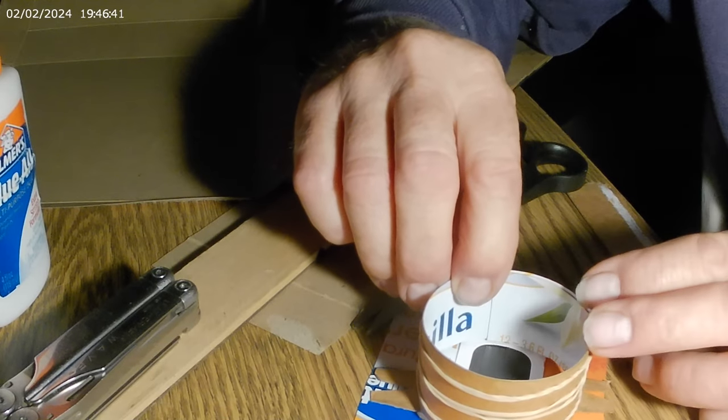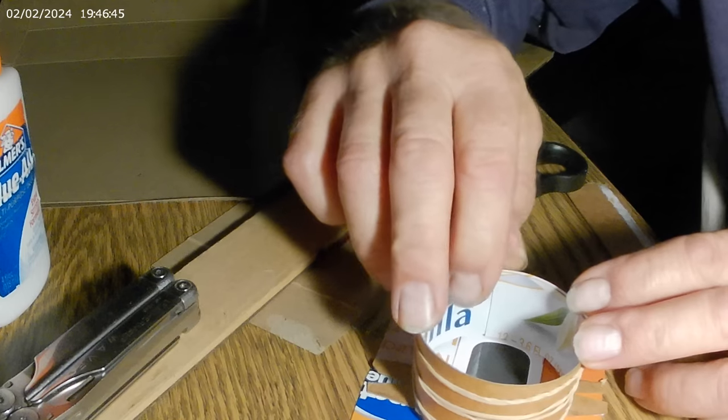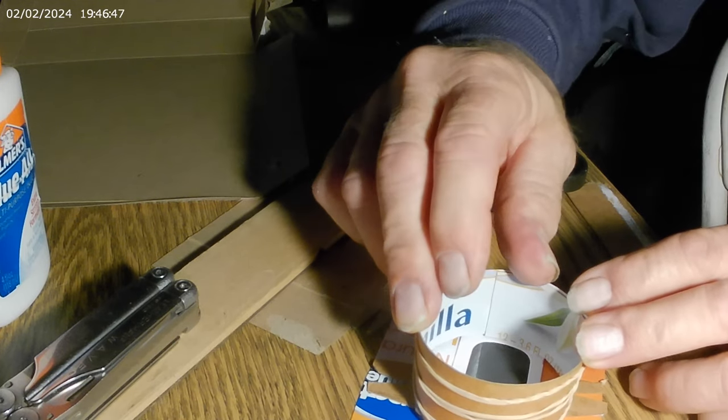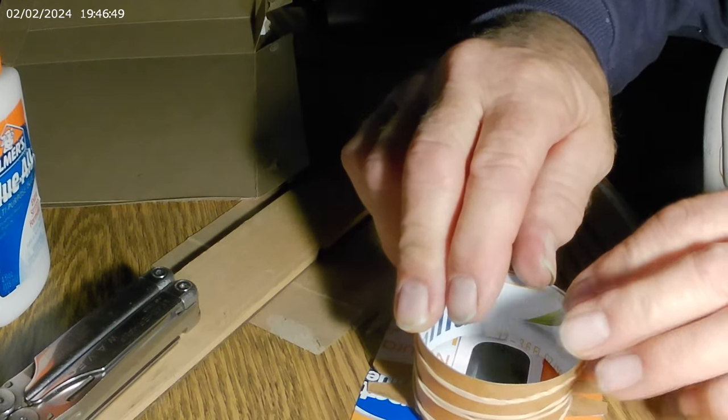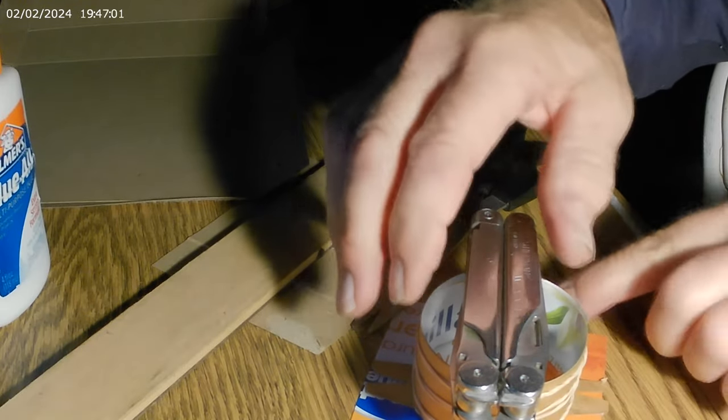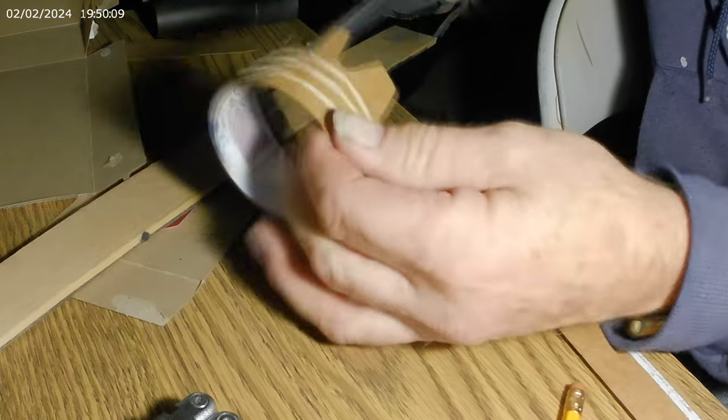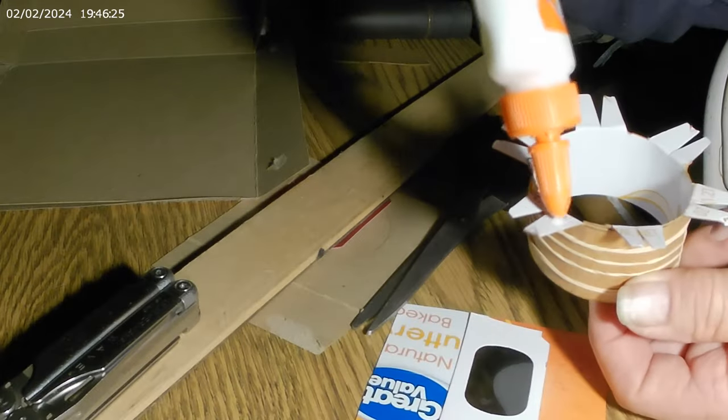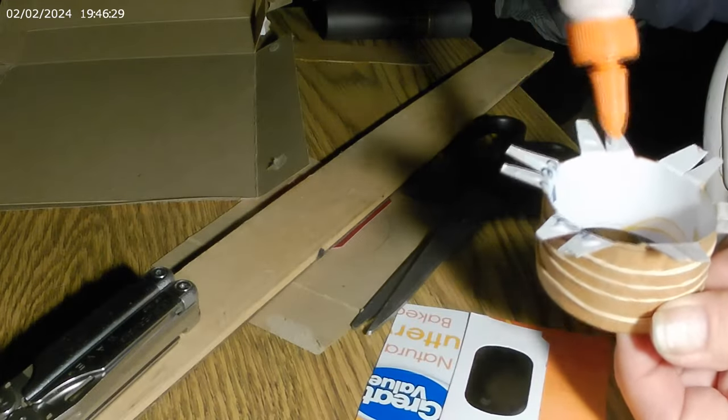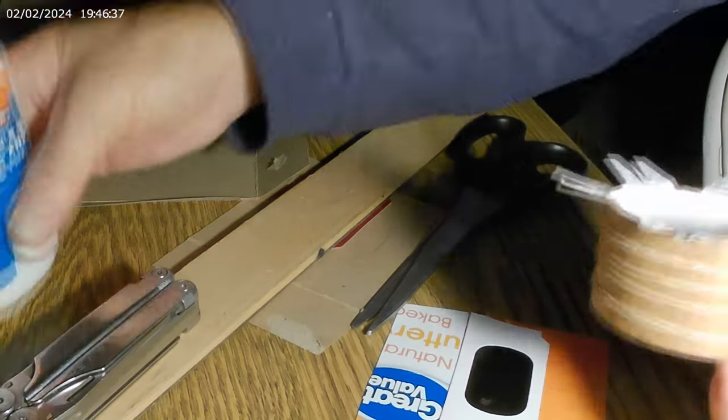And you want to line this up so that it's about an eighth of an inch from the edge of the circle going towards the center of the circle. So it's going to be off-centered. And then you're going to do the same thing for the other one.